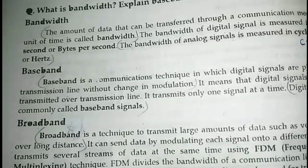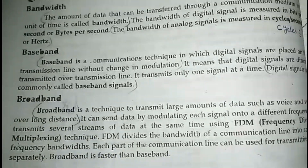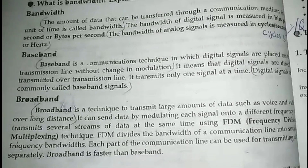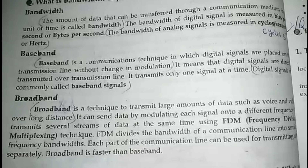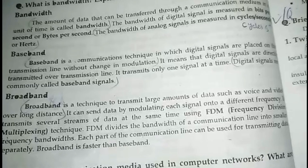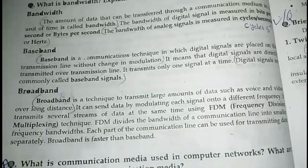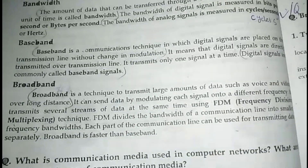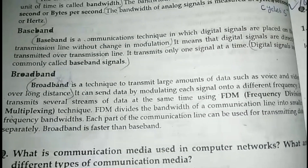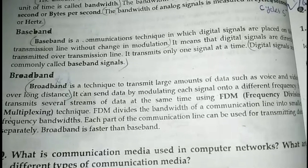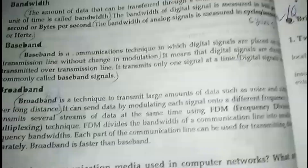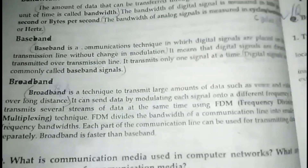Now we have baseband. Baseband is a communication technique in which digital signals are placed on the transmission line without any change in modulation. That means digital signals are directly connected and sent as they are. In baseband, we don't convert signals to analog — digital signals are sent as-is to the receiver.